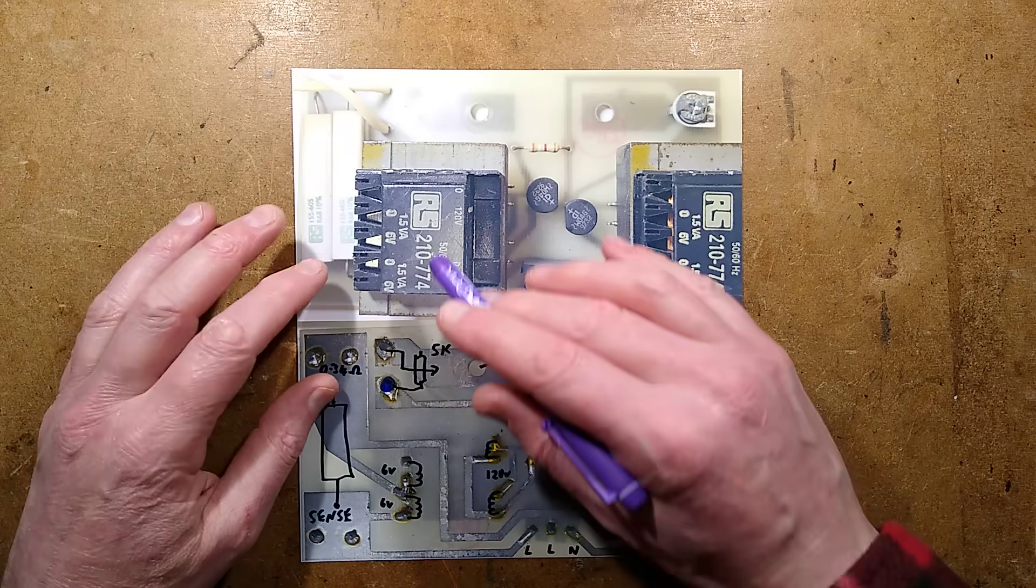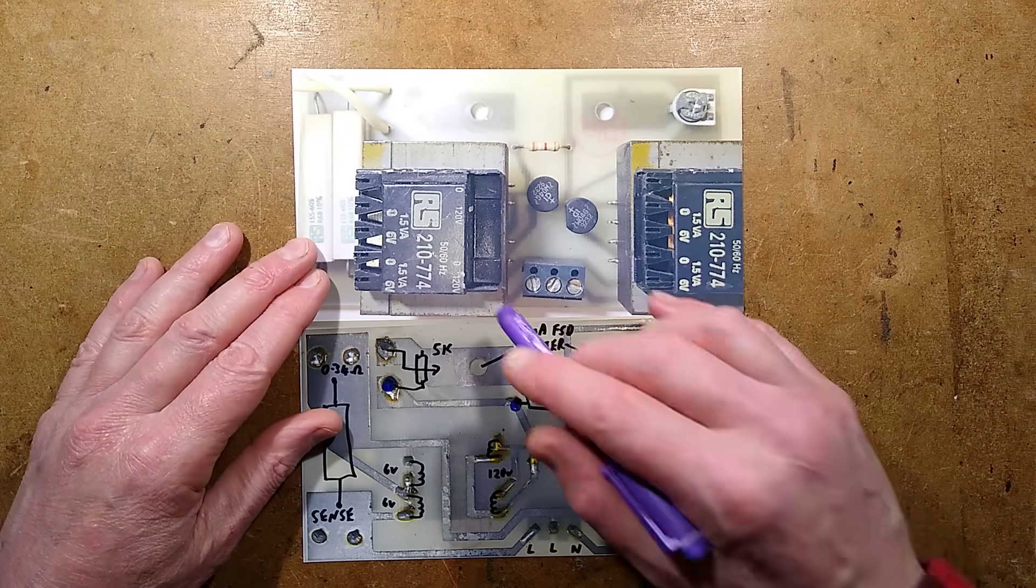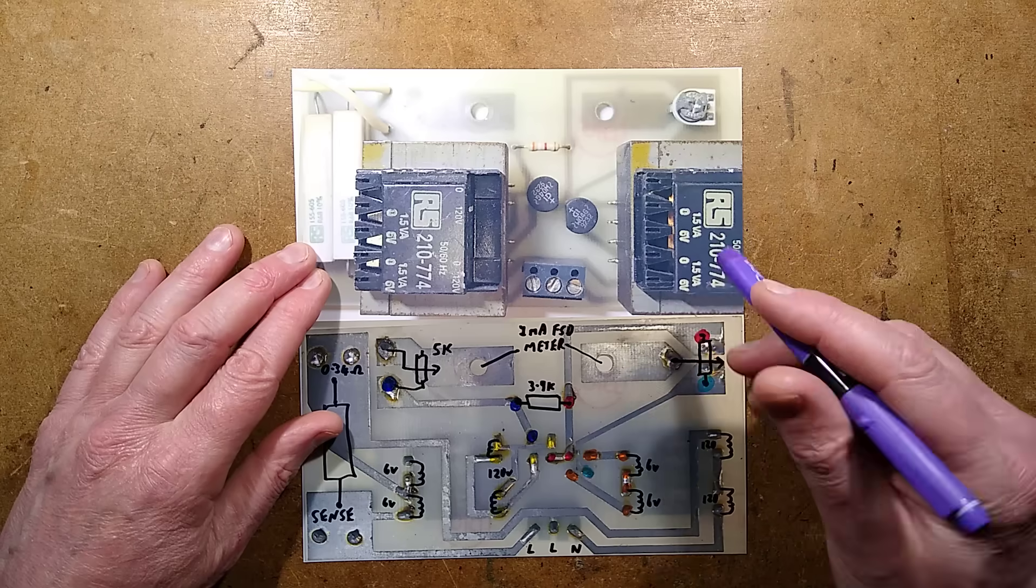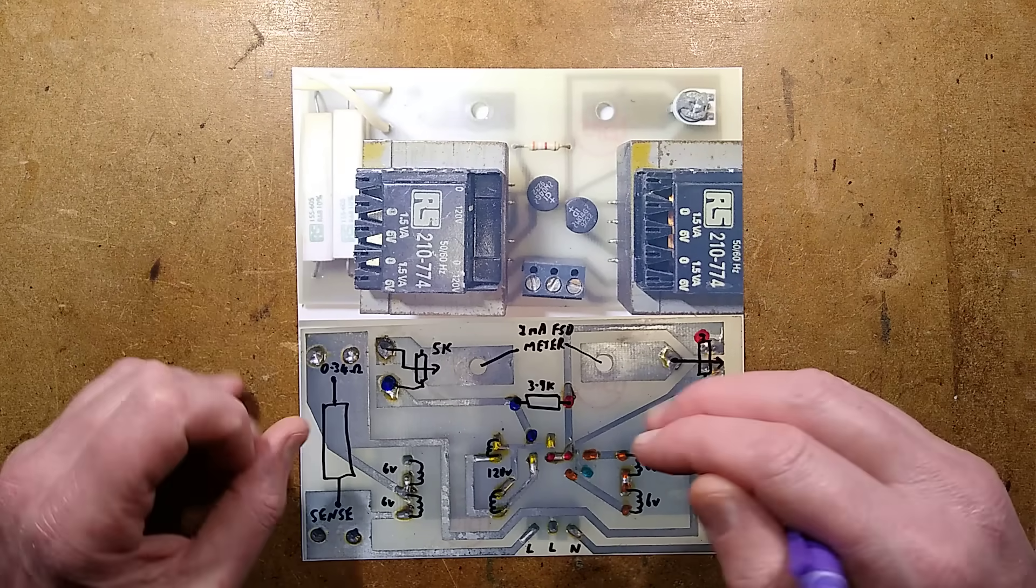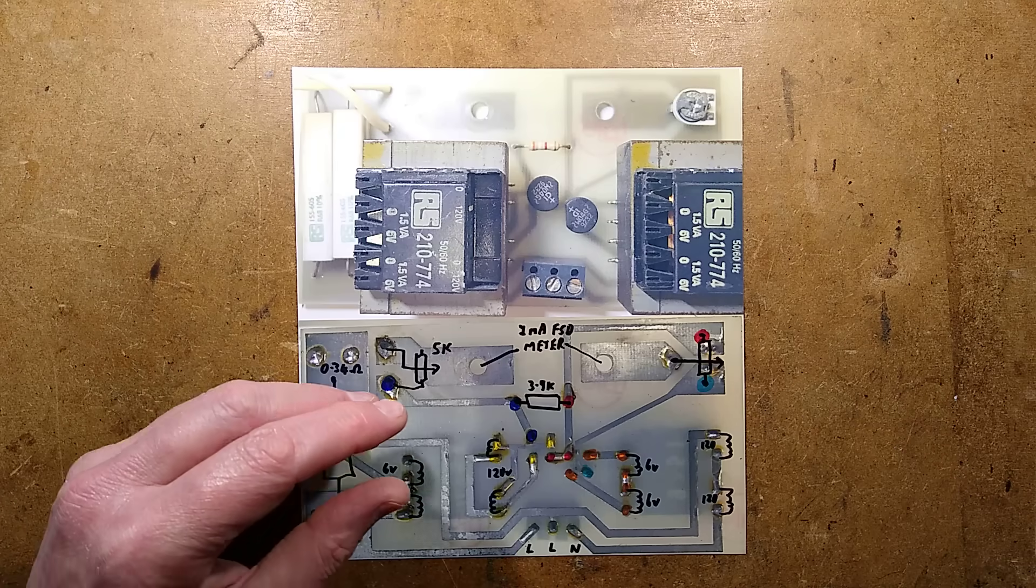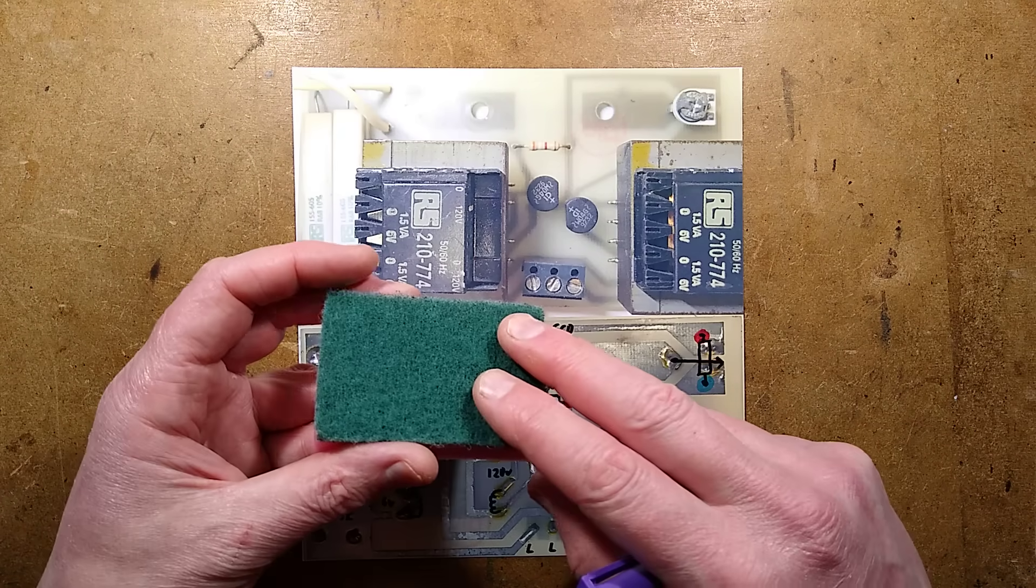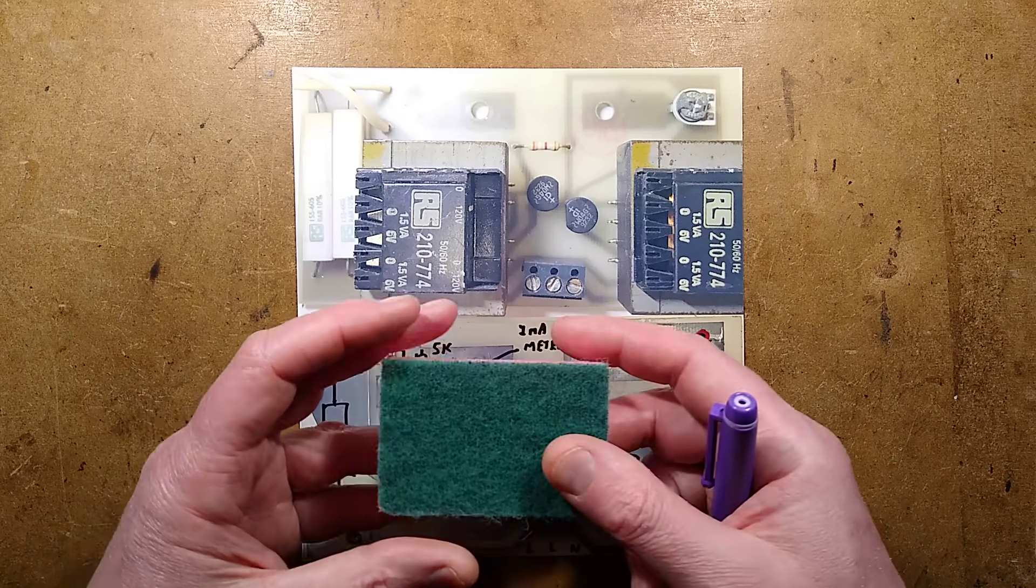A quick video about an unusual circuit board. I was sent a picture of the circuit board by Vic, who was maintaining a printed circuit board processing machine. The machine uses rollers with Scotch-Brite material on them to clean the surface of copper-clad circuit boards.